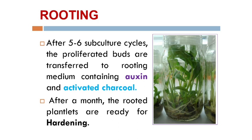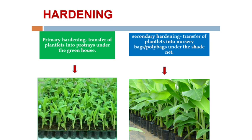After a month, the rooted plantlets are ready for hardening. There are two stages: primary hardening and secondary hardening. In primary hardening, the plantlets are transferred to pots under greenhouse conditions. In secondary hardening, the plantlets are transferred to nursery bags or poly bags under shaded conditions.